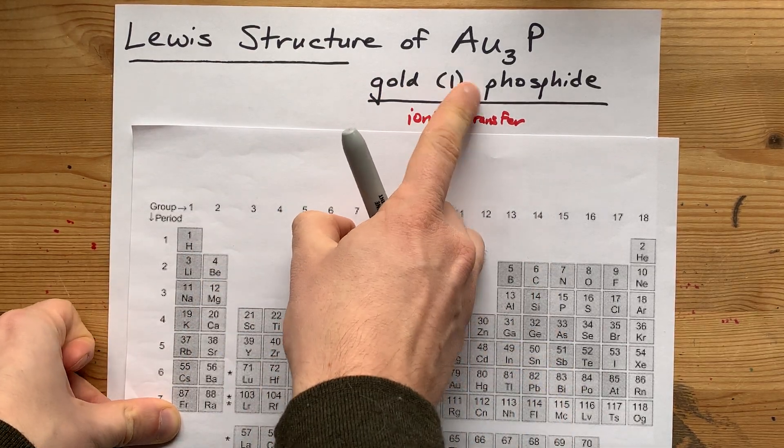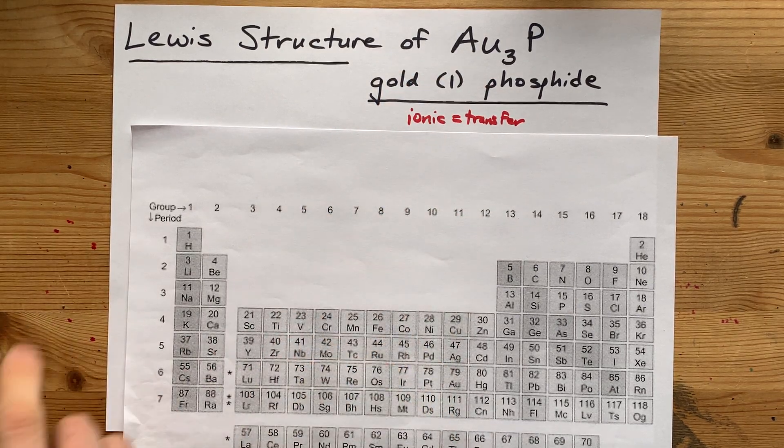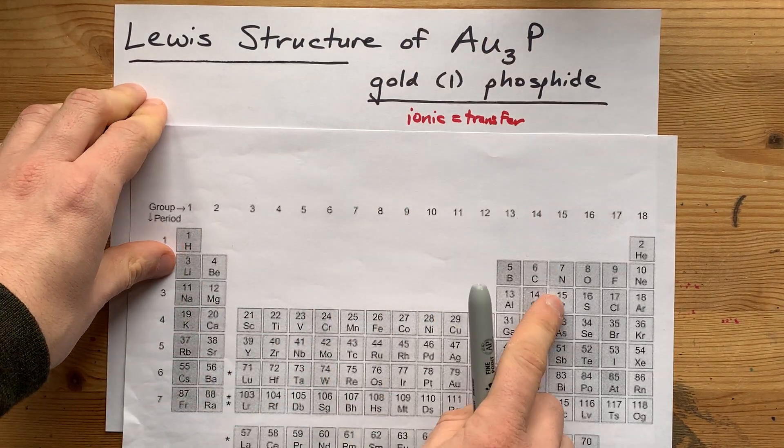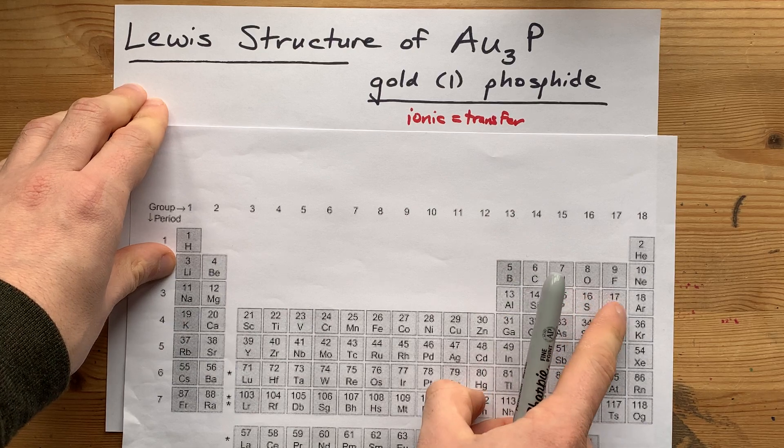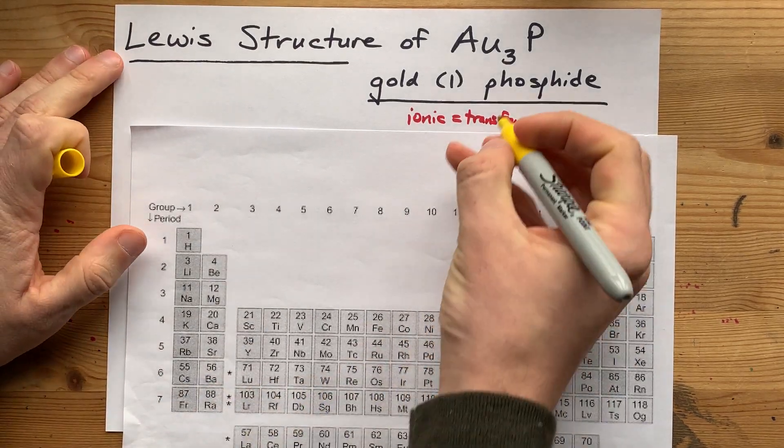Gold-1-phosphide, the gold has a charge of positive 1. Now, you can also get that from the formula. Phosphorus likes to have a charge of minus 3. We know that because it's 1, 2, 3 electrons short of being like a noble gas.